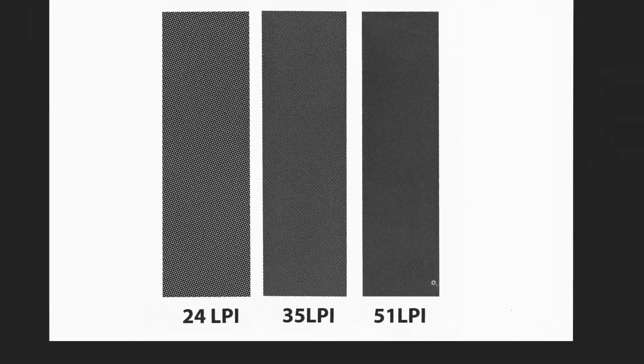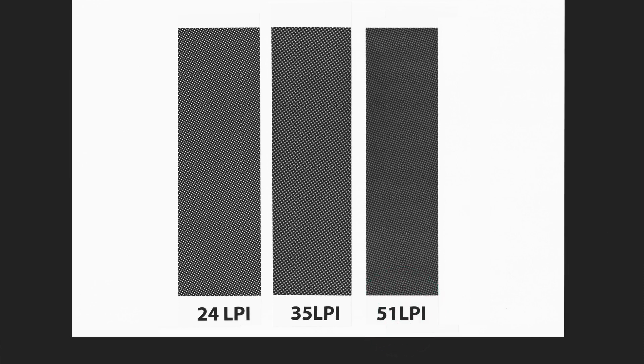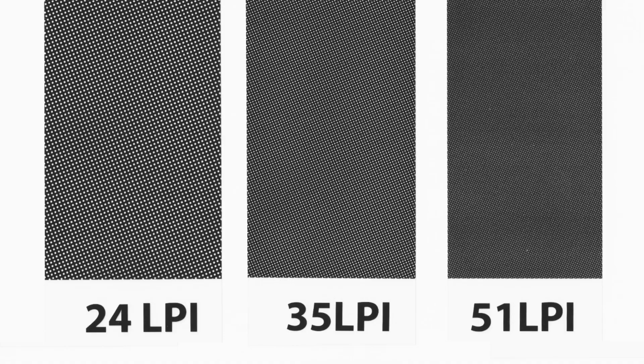Different mesh counts and emulsions can hold different resolutions of images. You can have really tiny dots on a 90T screen — that would be like 51 LPI — and a 90T mesh in the UK is a 230 in the US. If you want a lower mesh screen, say 43T, you're not going to be able to get away with finer dots — they'll have to be bigger, and bigger still as you go lower in mesh size. You can use halftones as a visual effect or try to get the dots as small as possible on different meshes.